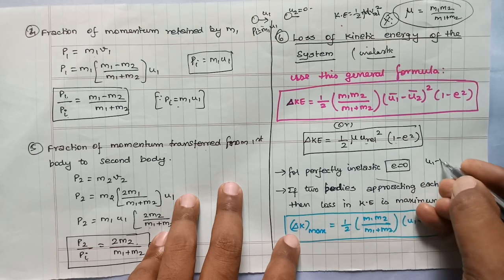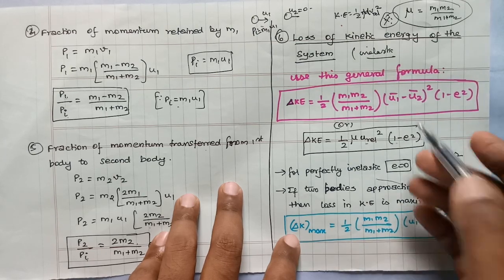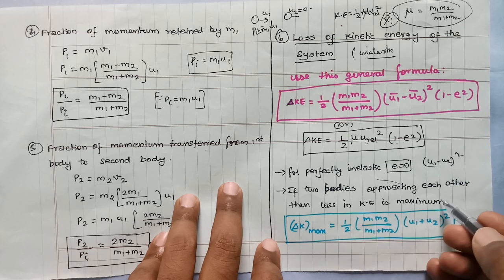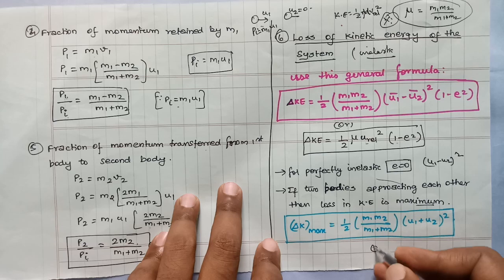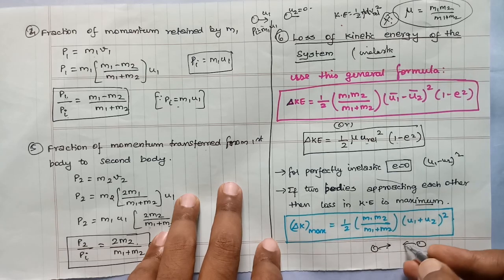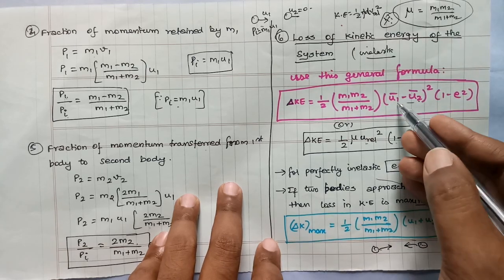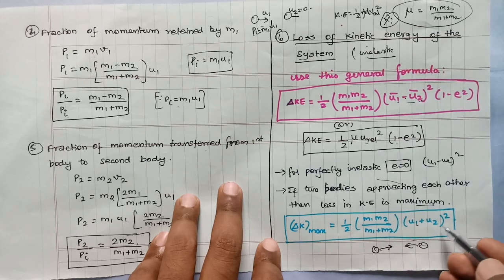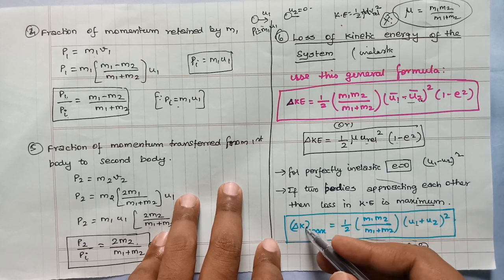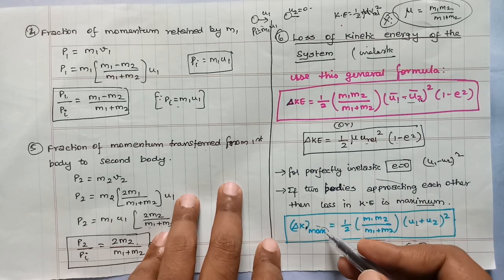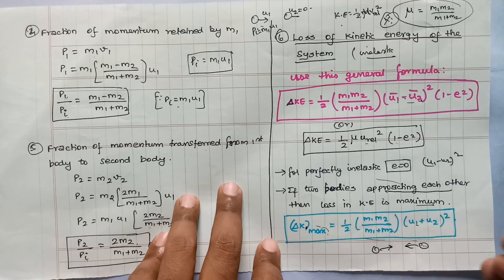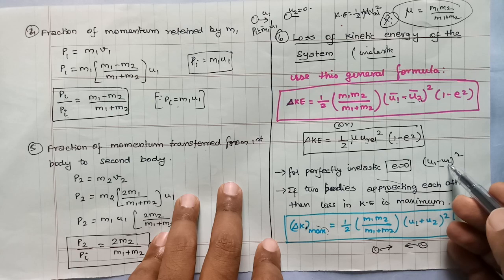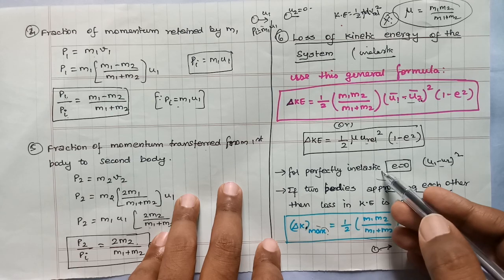If two bodies are approaching each other, the loss in kinetic energy is maximum. When two bodies move in opposite directions, the relative velocity term becomes U1 plus U2, so the change in kinetic energy uses U1 plus U2 whole squared. For the perfectly inelastic collision case, the formula uses U1 minus U2 whole squared.